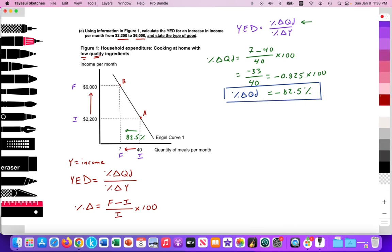So here we have half of the formula for YED. Now let's calculate the other half, the change in income. So now we're going to address this component of the formula. So percent change in income, our final value for income is $6,000.